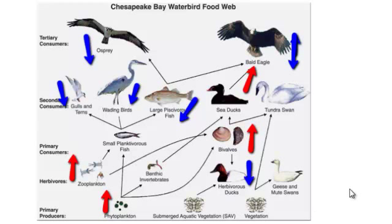Again, this is just one example of a way to show or demonstrate your understanding of what would happen in a food web if we were to add or remove a species. There are many other ways to do it, and we look forward to your creativity as you complete your interactive poster.